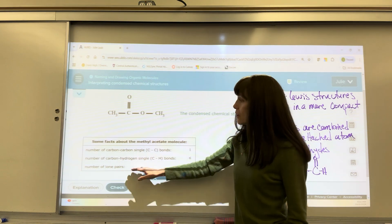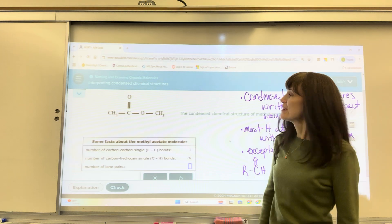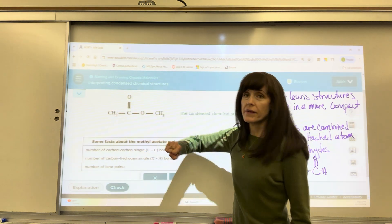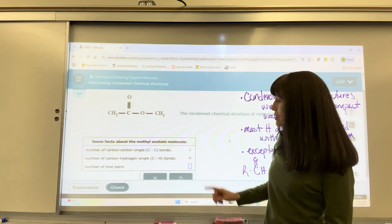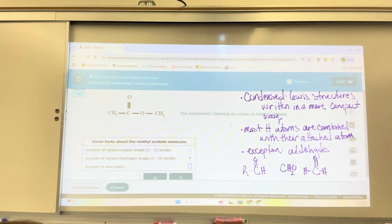And then lastly, it wants to know how many lone pairs we have. So we've got two on the oxygen, two on the oxygen, a total of four. So four lone pairs.